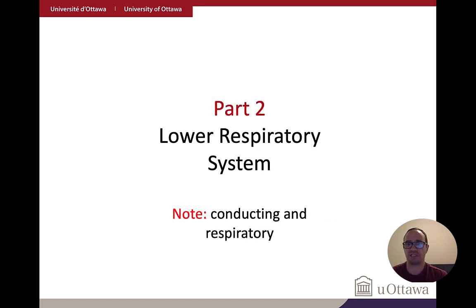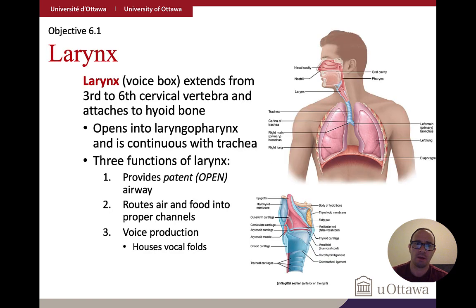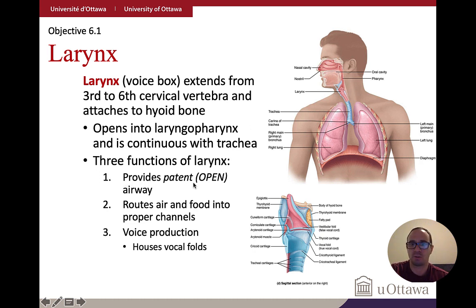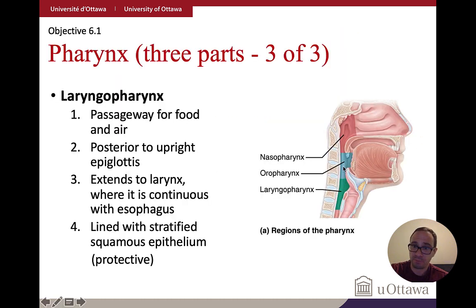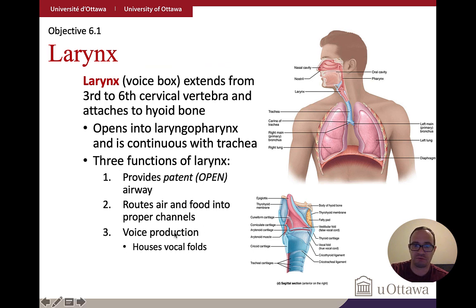The lower respiratory system is divided into conducting and respiratory zones — conducting is about getting air into the system, while respiratory relates to gas exchange. The larynx extends from C3 to C6 and attaches to the hyoid bone. It has three functions: providing a patent airway, routing food and air into the correct chambers, and voice production.